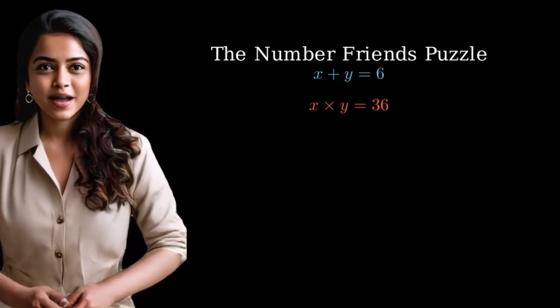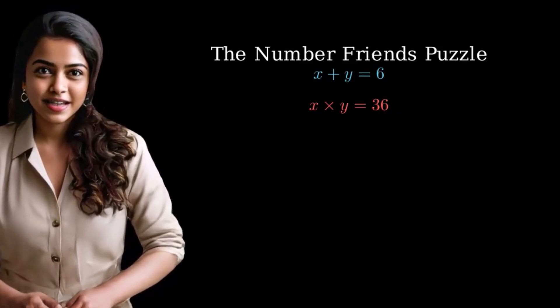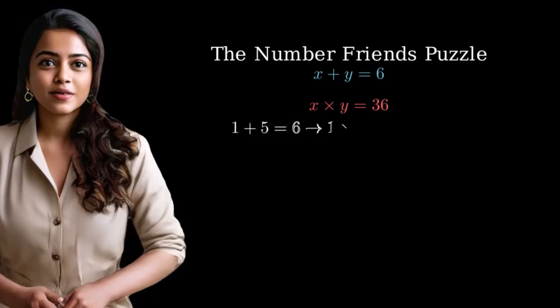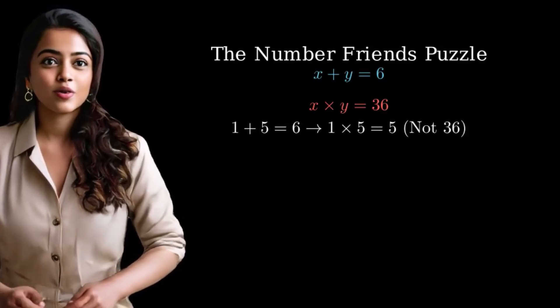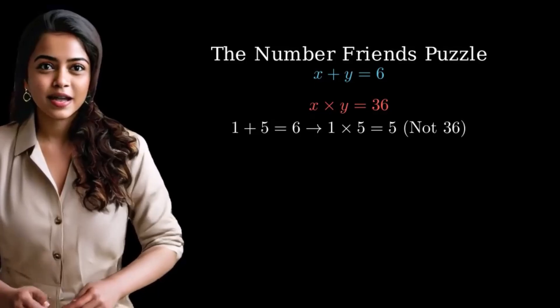Let's try some numbers that add up to 6, and see what happens when we multiply them. First, let's try 1 plus 5 equals 6. But 1 times 5 equals 5, not 36.